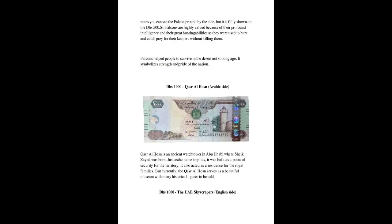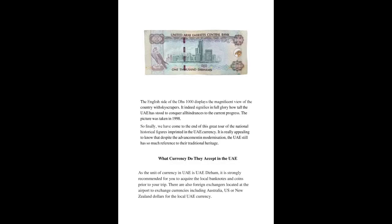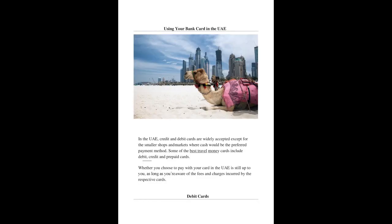Today the UAE paper currency starts from DHS 5 up to DHS 1000, while there are three denominations of UAE coins: 20 phils, 50 phils, and DHS 1. The UAE currency coins are represented in denominations called phils, except the DHS 1.